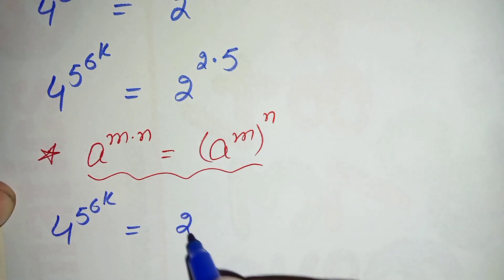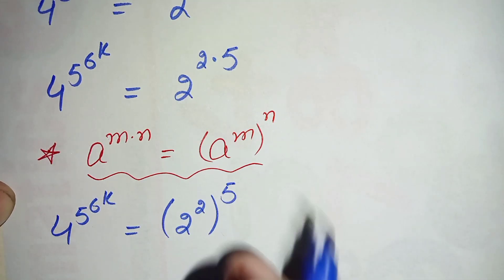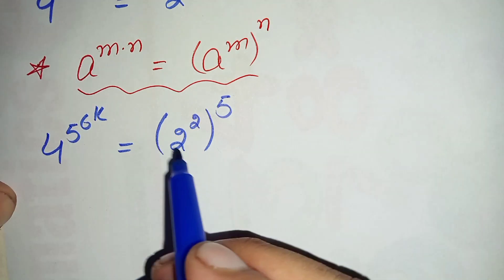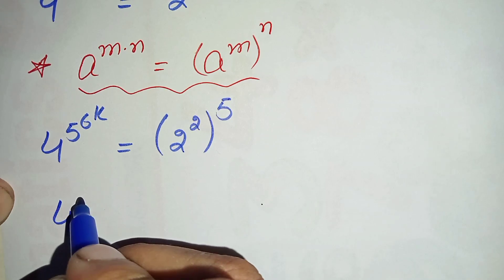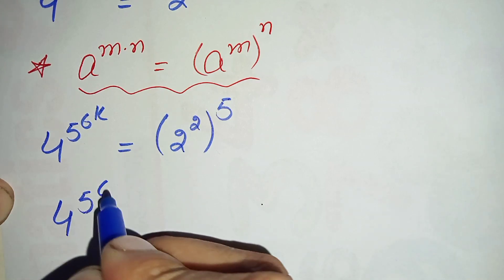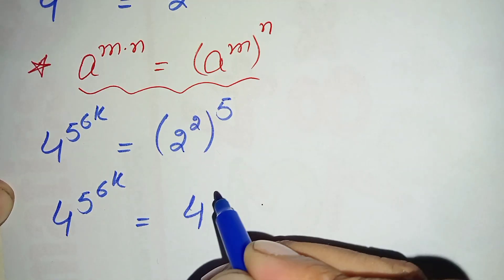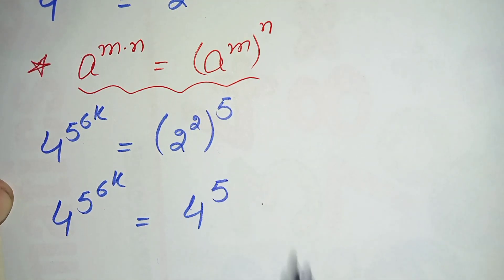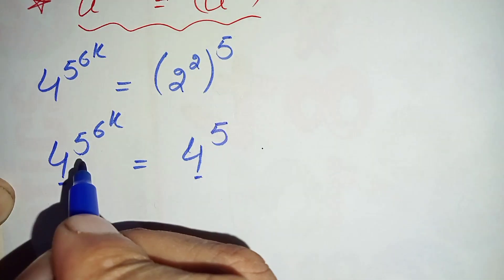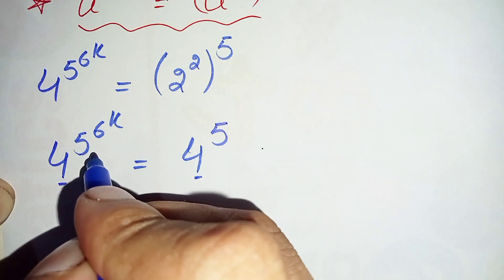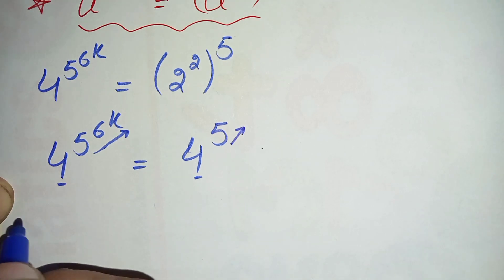The right hand side becomes 2 raised to power 2, whole raised to power 5. The value of 2 raised to power 2 is 4, so this becomes 4 raised to power 5. Now looking at both sides, the bases are the same, so we can compare the powers using the same-base formula.